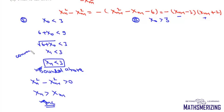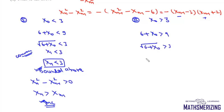Since the sequence is bounded above and increasing, it is going to converge. In case two, when x₀ is greater than three: six plus x₀ is greater than nine, so the square root of six plus x₀ is greater than three, meaning x₁ is greater than three. Taking square roots again, x₂ is greater than three, so xn is greater than three — the sequence is bounded below.